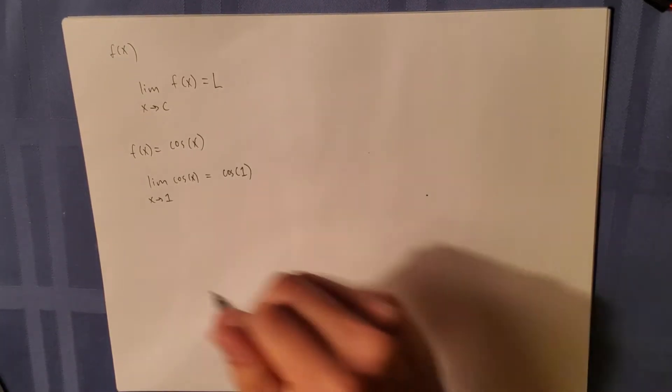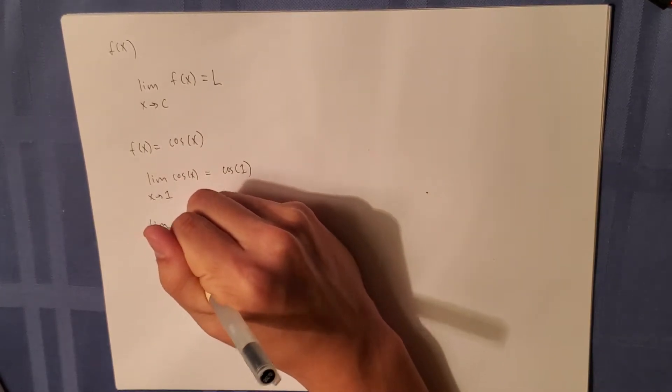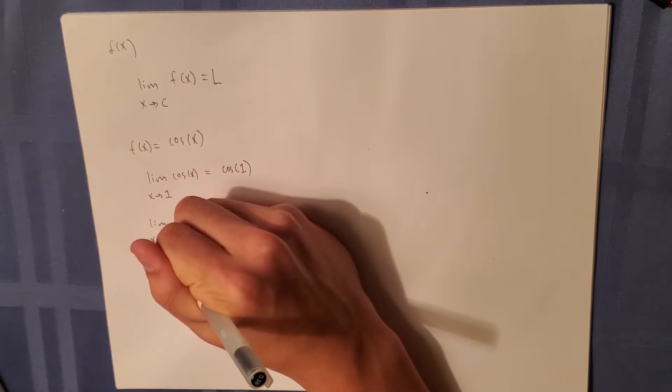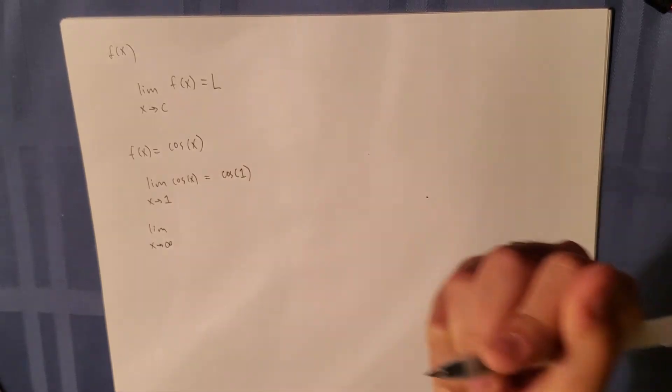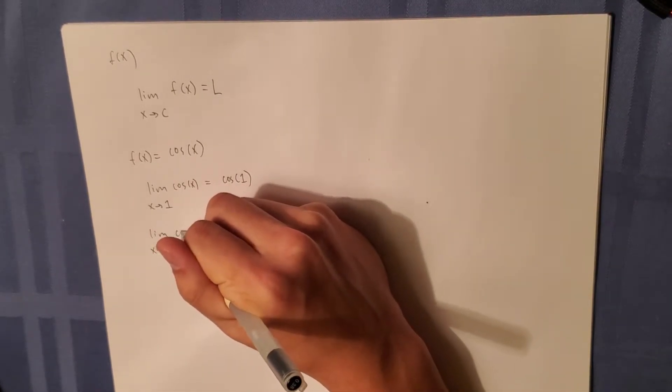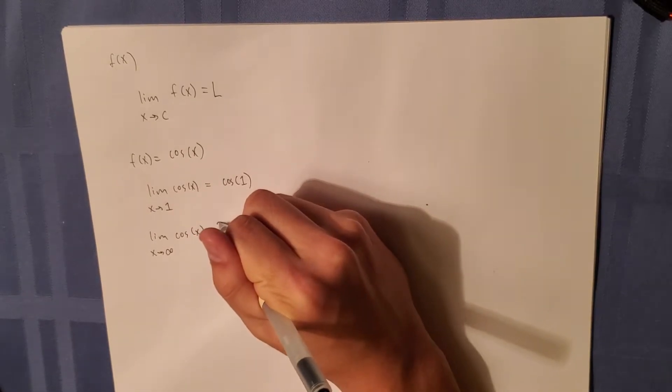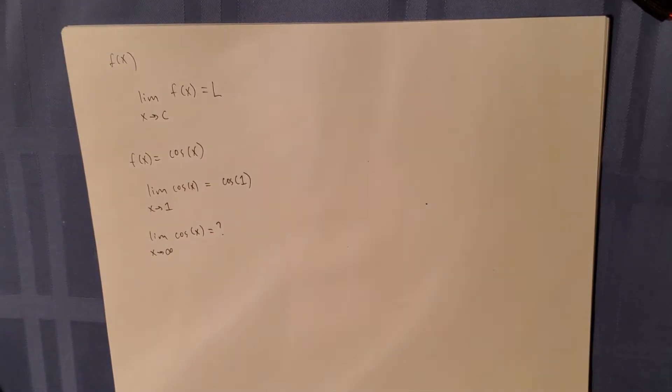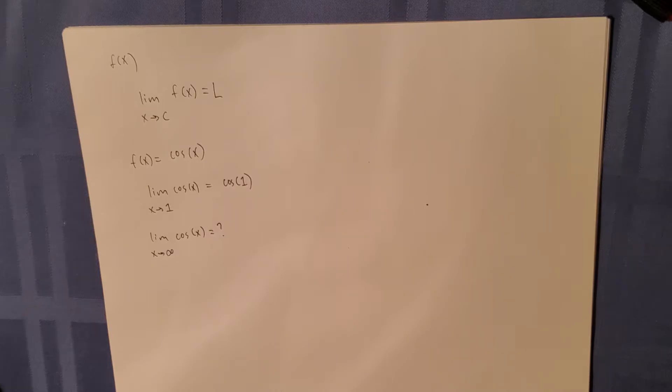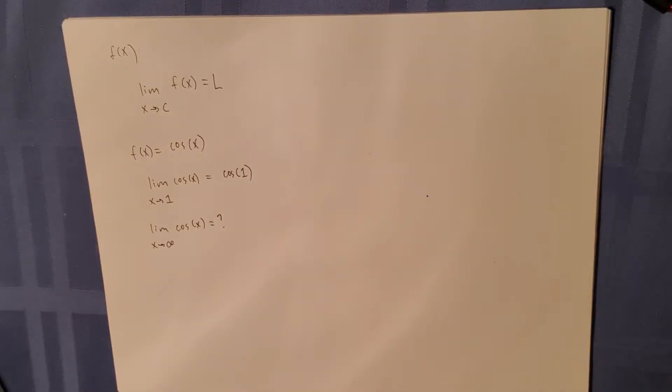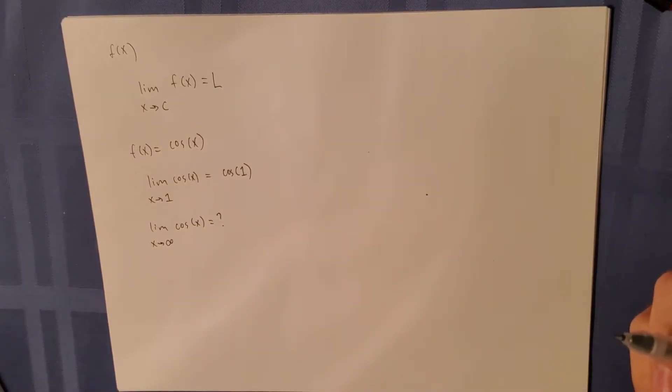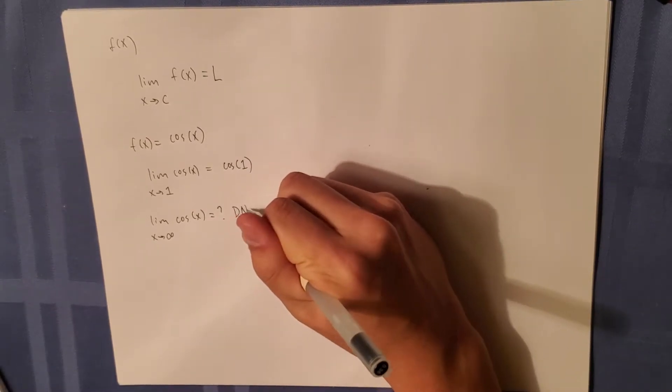However, if we do the limit as x approaches infinity of cosine of x, we don't really know what this is. Because as we know, cosine of x is periodic, so as x approaches infinity this limit does not exist.